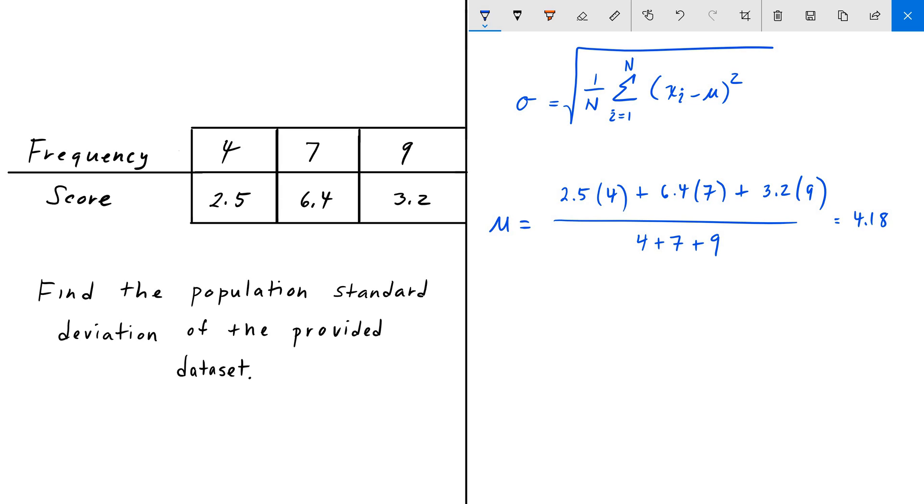The sum from i equals 1 to 20, so n equals 20, of xi minus μ squared is going to be our first xi, which is 2.5.